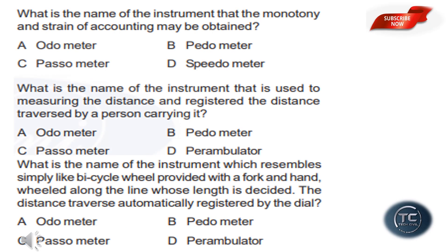What is the name of the instrument by which the monotony and strain of counting may be obtained? The options are autometer, pedometer, passometer, and speedometer. The answer is option C: passometer.